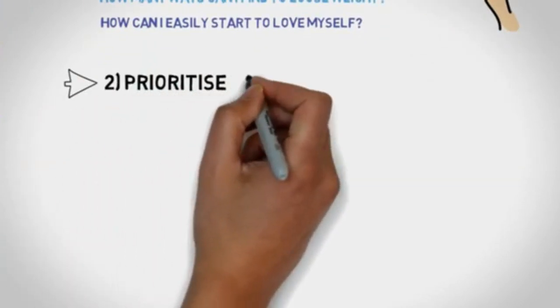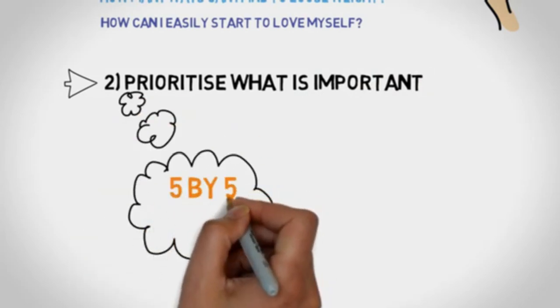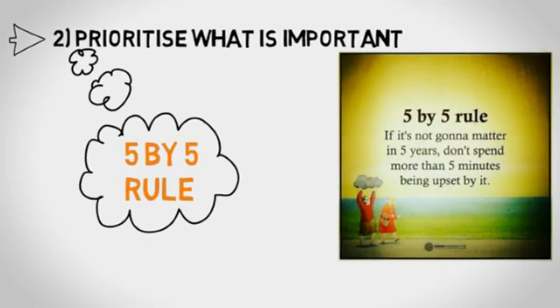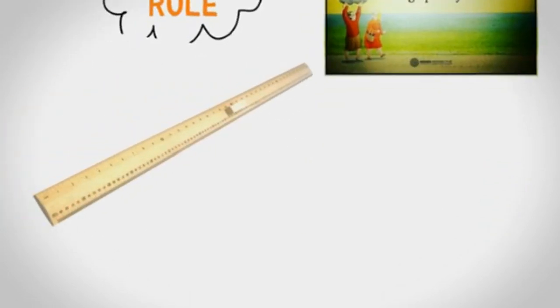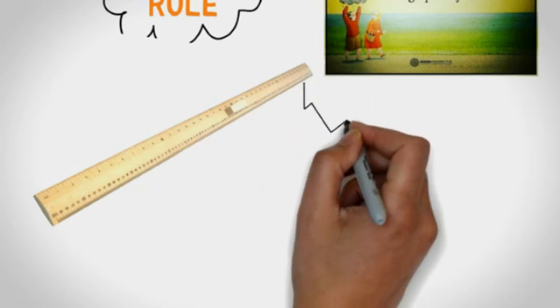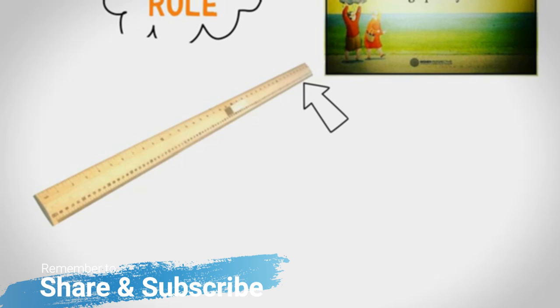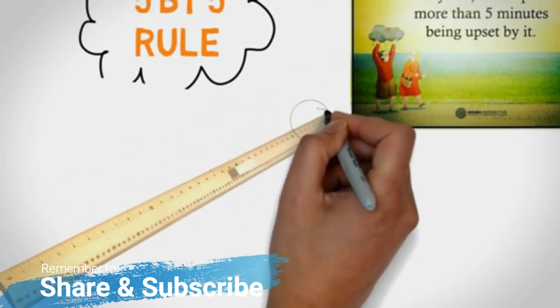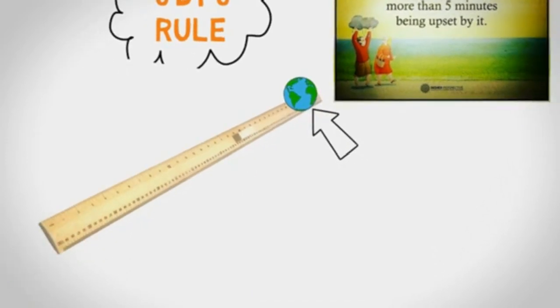Number 2. Prioritize what is important. There's a really lovely rule which is called the 5 by 5 rule. Which is if it's not gonna matter in 5 years, don't spend more than 5 minutes being upset by it. Just imagine if your life is a long tape. Now think of the argument you've just had. Or a presentation you have to do. Or a job interview you have to go to. And ask yourself. How much of the tape does this event actually take? Exactly. So don't make it seem like it's your entire life.